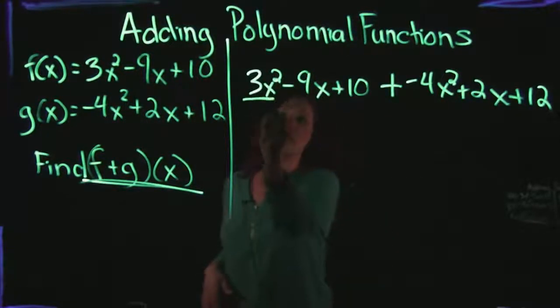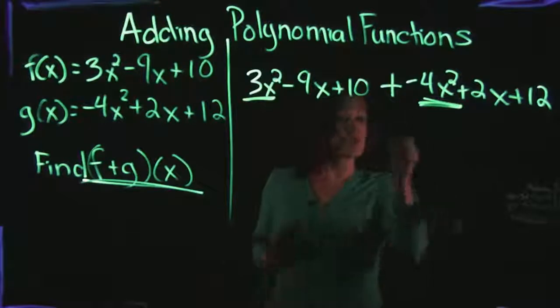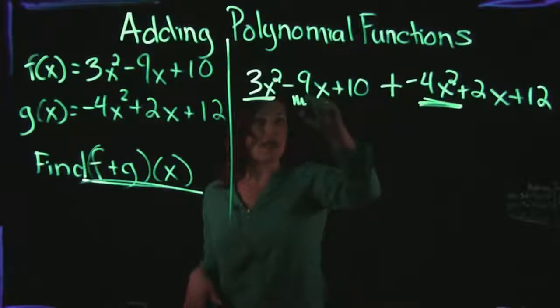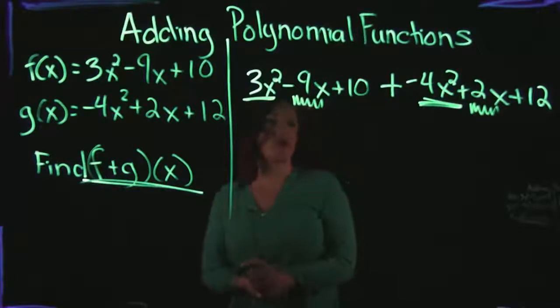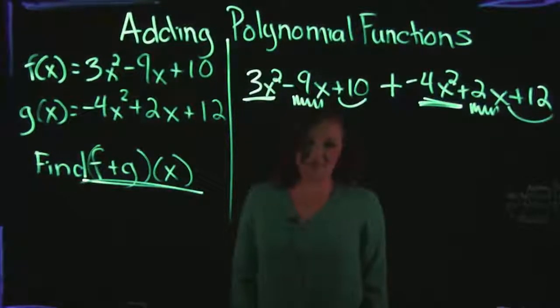For example, an x squared goes with an x squared, whereas an x to the first power would go with another x to the first power. Numbers are like terms as well. So you can go ahead and combine two numbers together.